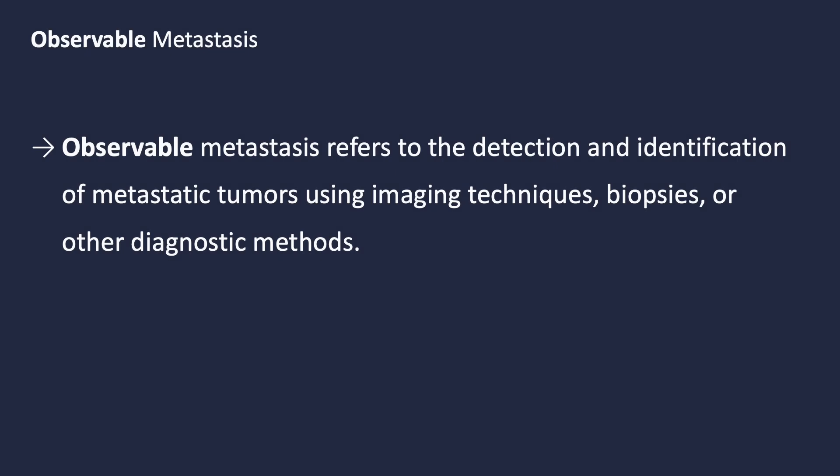Observable metastasis refers to the stage where we can detect and identify metastatic tumors using various diagnostic methods. This stage is crucial because it's when metastasis becomes clinically evident. Imaging techniques like CT scans, MRIs, and PET scans, along with biopsies and blood tests, allow us to see and confirm the presence of secondary tumors. Identifying these tumors helps in staging the cancer, determining the extent of its spread, and planning the most effective treatment strategies.